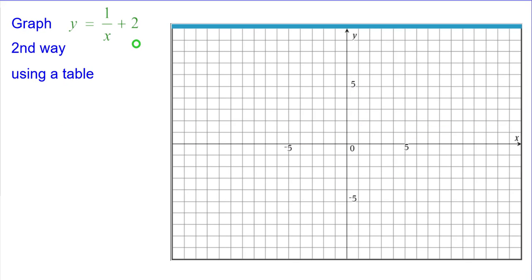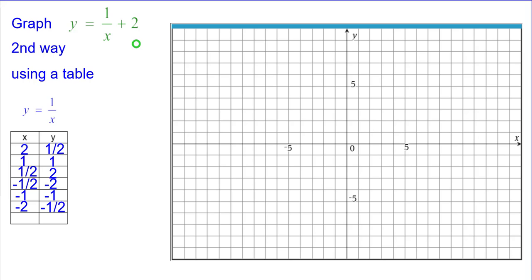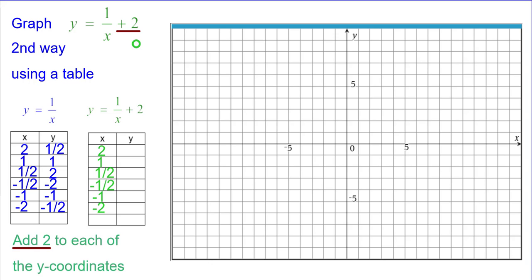The second way is using a table. And we're going to use the y equals 1 over x table of these six points to start with. We're going to add 2 to each of the y coordinates, again, because that's what it says to do in the equation.